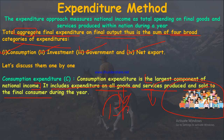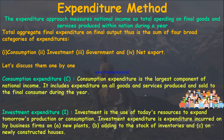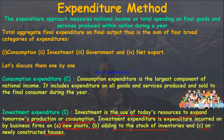The second category is investment expenditure — the use of today's resources to expand tomorrow's production or consumption. Examples include new plant, adding to the stock of inventories, and newly constructed houses. Remember these three points as they frequently appear in MCQs.